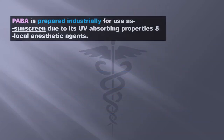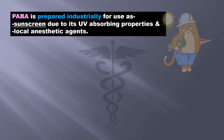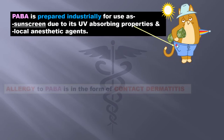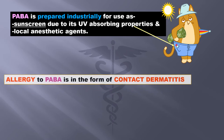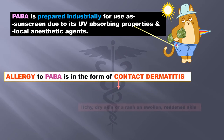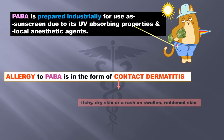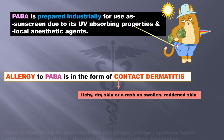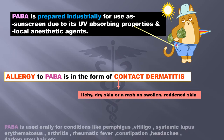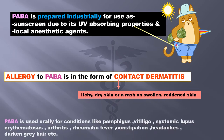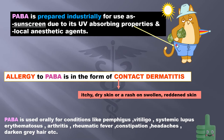PABA is prepared industrially for use as sunscreen due to its UV-absorbing properties and as a local anesthetic agent. Allergy to PABA is in the form of contact dermatitis with itchy, dry skin or a rash on swollen, reddened skin. PABA is used orally for conditions like pemphigus, vitiligo, systemic lupus erythematosus, arthritis, rheumatic conditions, constipation, headaches, and to darken gray hair, etc.